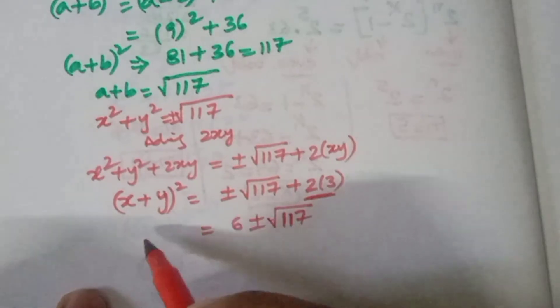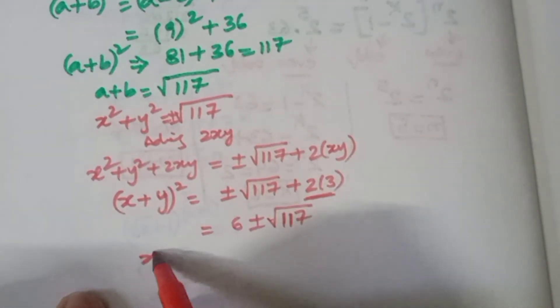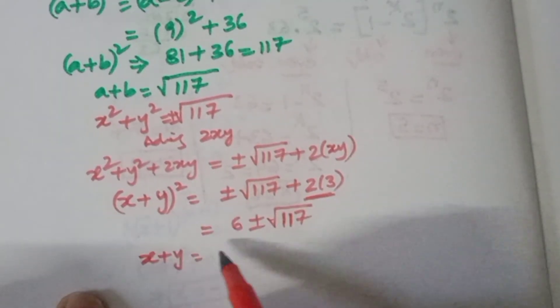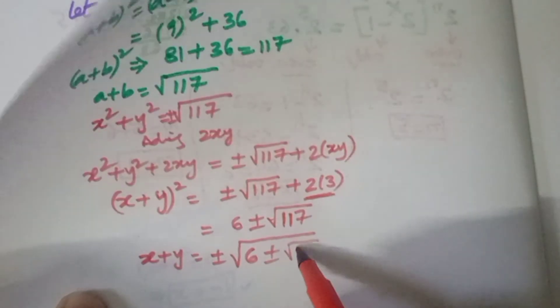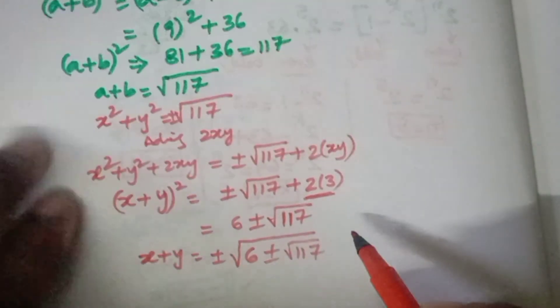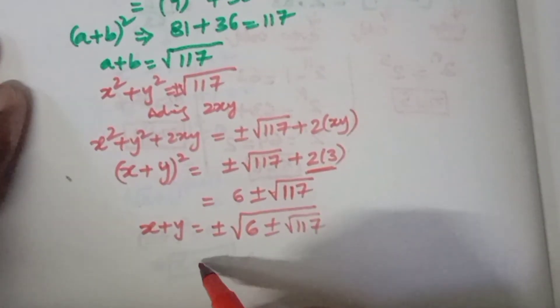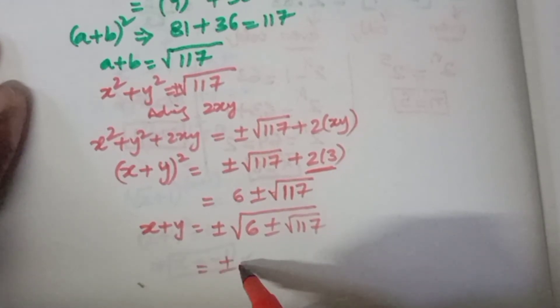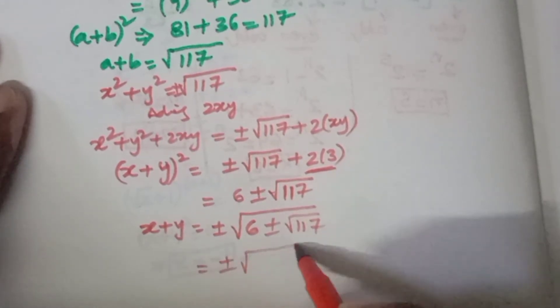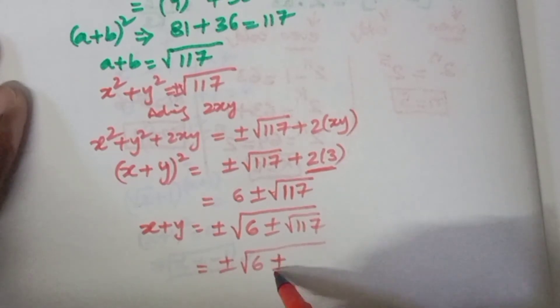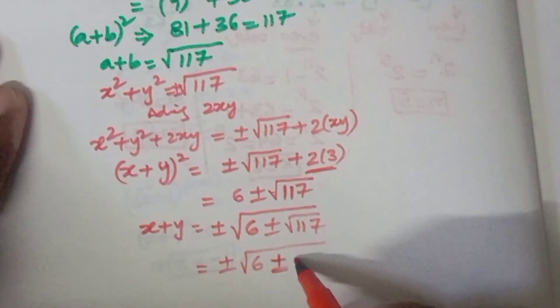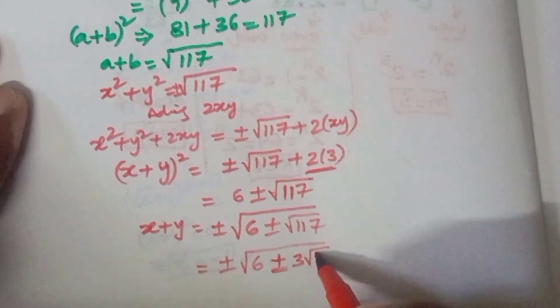Therefore, x plus y is equal to plus or minus the square root of 6 plus or minus root of 117. This can be further simplified: root of 117 can be broken down as 3 root 13.